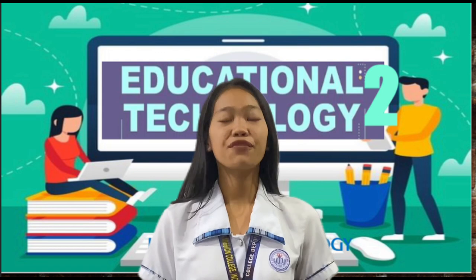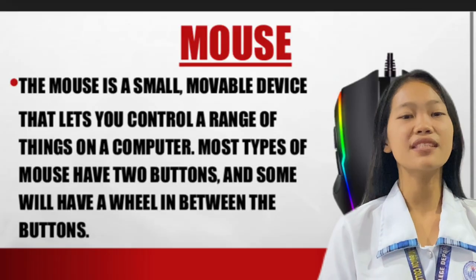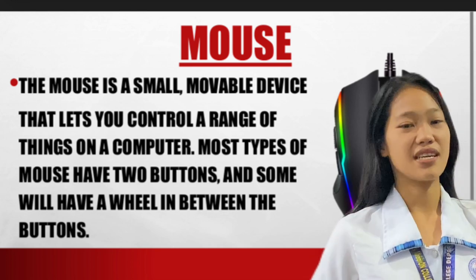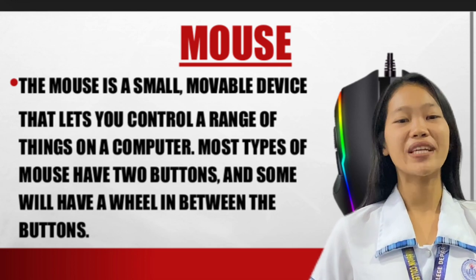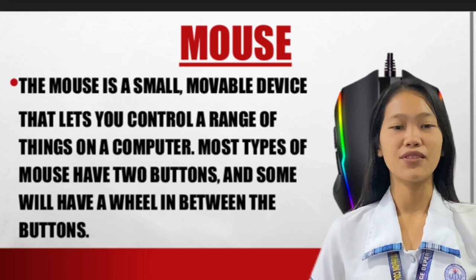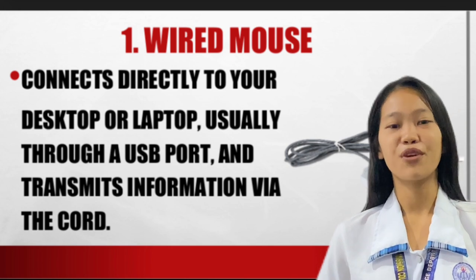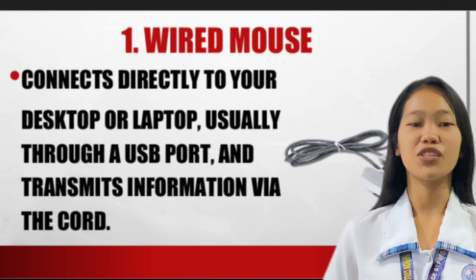Hello everyone, I am Sunshine Clark Quebec National. Today I will discuss the different types of mouse. But first, I will discuss what is a mouse. The mouse is a small, movable device that lets you control a range of things on a computer. Most types of mouse have two buttons and some will have a wheel in between the buttons. The first type of mouse is the wired mouse. The wired mouse connects directly to your desktop or laptop, usually through a USB port, and transmits information via the cord.